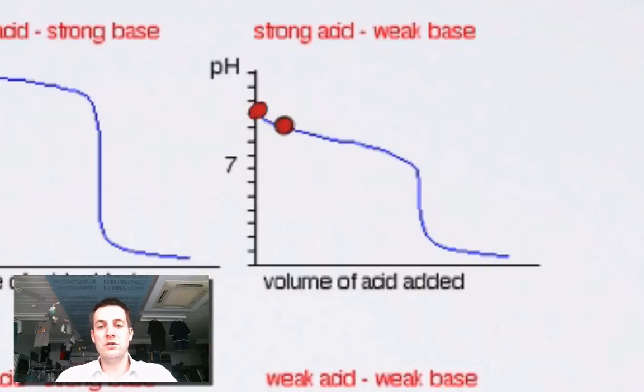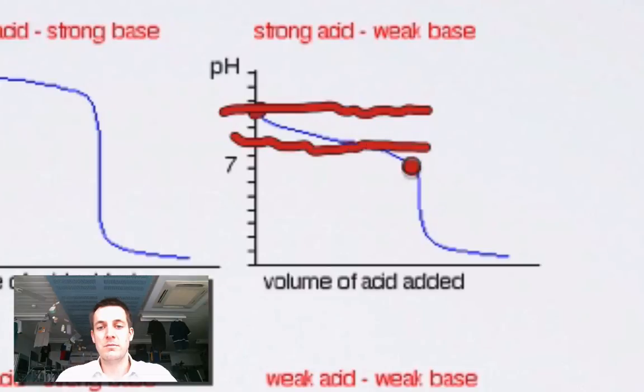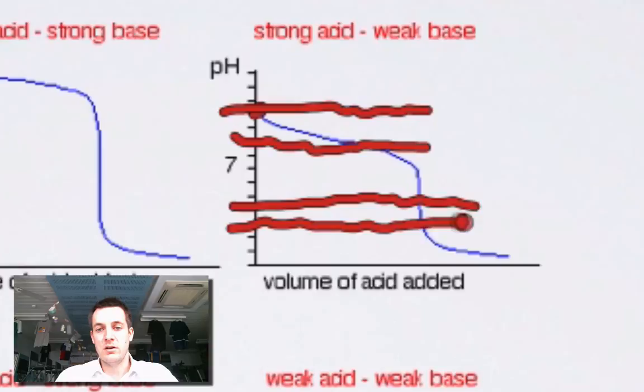Now remember, if we'd used phenolphthalein, phenolphthalein's endpoint, or the pH that it changes color at, is around about this range here. It's about 8 to 10. So in other words, phenolphthalein would have changed color way before equivalence. So I've used methyl orange because it changes color roughly in that vertical part of the graph. The endpoint of the indicator matches the pH equivalence.